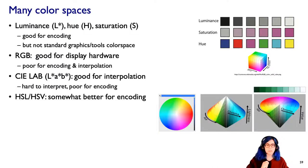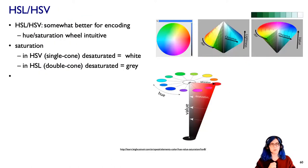There's another space, HSL or HSV, that is somewhat better. Many of you have probably used color pickers where there is a hue saturation wheel like we see in the upper middle. Fully saturated colors are on the outside of the circle, and as you go towards the center, you're getting less and less saturated until, as we see in this case, you hit white exactly in the middle. This is an intuitive way for people to think about color.